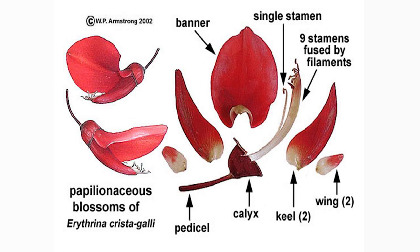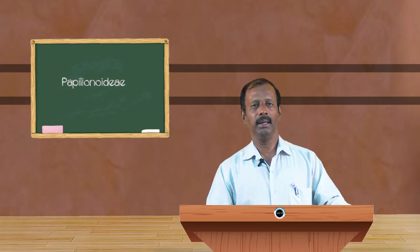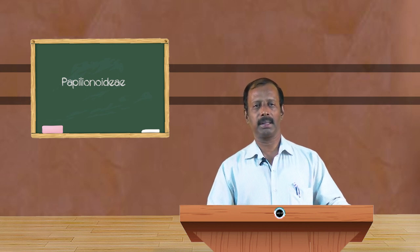The flower has an elongated pedicel, and it possesses calyx, corolla, androecium, and gynoecium. In some flowers, bracts are also present. With respect to the calyx, the sepals are usually five in number, green in color, and are either united or free. They mostly show valvate aestivation, characterized by end-to-end arrangement of calyx lobes, forming a cup-shaped structure typical of most members of Papilionidae.